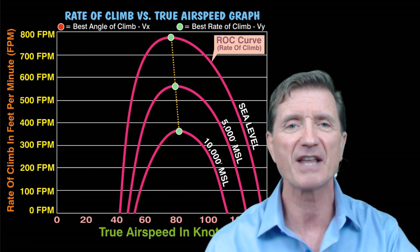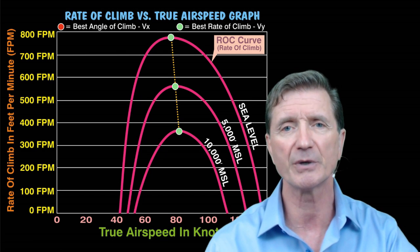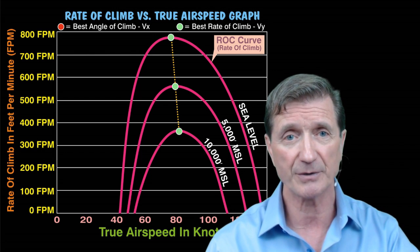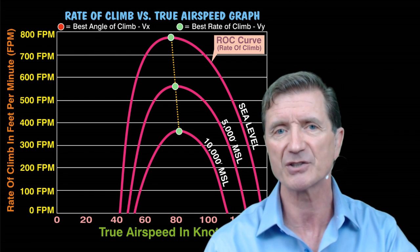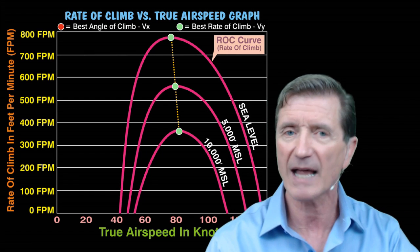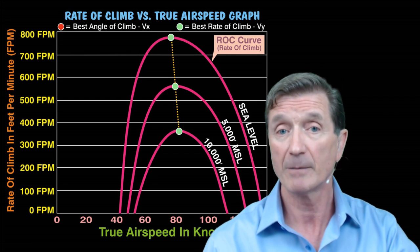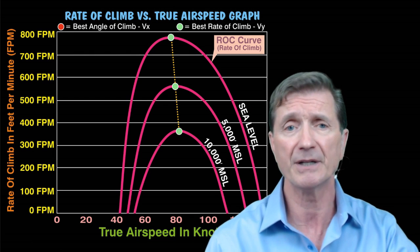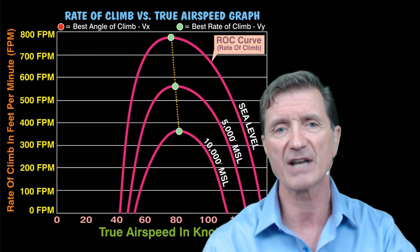I want you to take notice that the top of each curve shifts to the right slightly as altitude increases. In other words, as the maximum rate of climb decreases with altitude, the airspeed at which this occurs increases slightly when measured as a true airspeed. This is found by dropping down to the horizontal axis of the graph, which is calibrated in terms of true airspeed. The reason I'm using true airspeed on the horizontal axis instead of indicated airspeed is that it allows us to more accurately represent the airplane's performance at various altitudes.